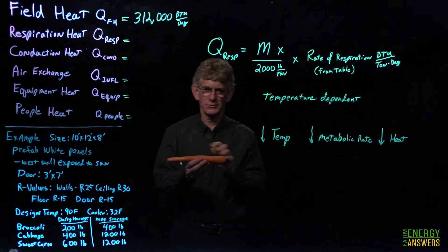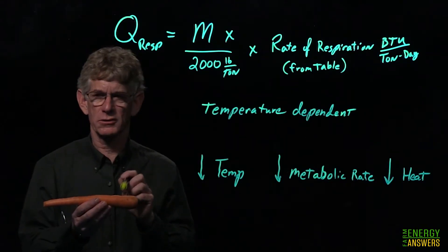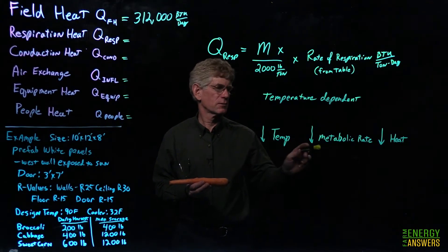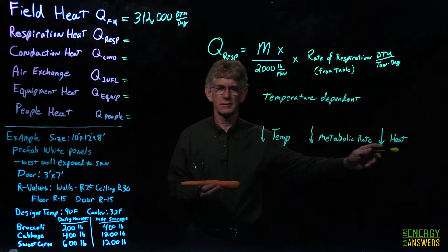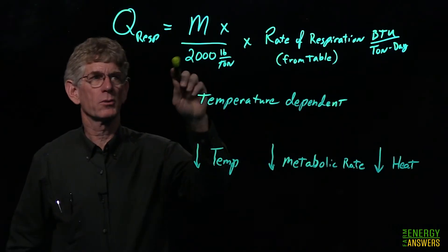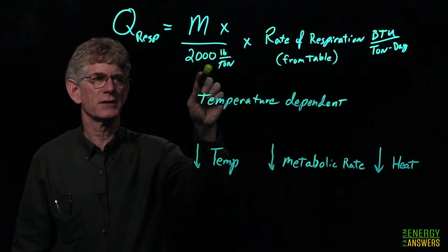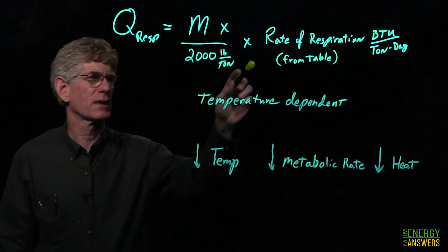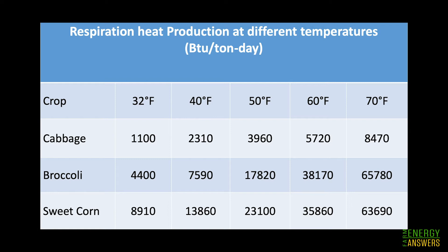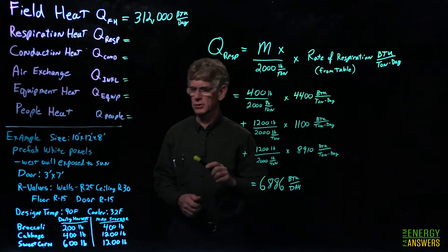Next we talk about respiration heat. Even though a carrot has been harvested, its cells are still active — they're converting stored sugars to heat. As temperature is reduced, the metabolic rate is reduced, heat generated is reduced, and the shelf life is extended. The formula is: (mass in pounds ÷ 2,000 lbs per ton) × the respiration rate, which you look up in a table after the product has been cooled and is being maintained in the cooler.